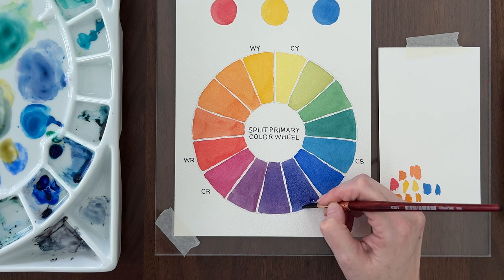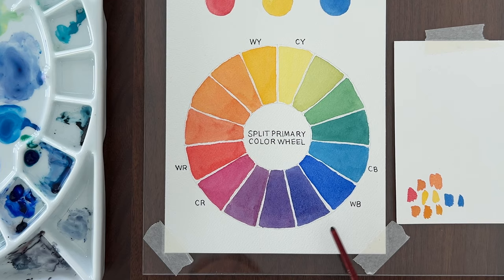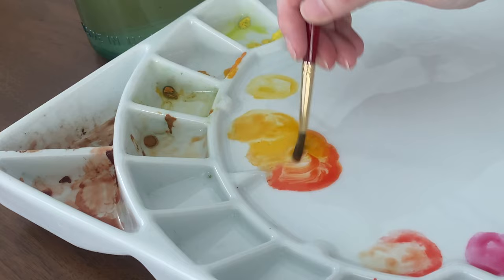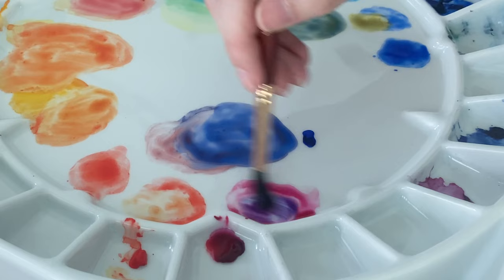So this split primary color chart is your recipe card for mixing clean, vivid colors. If you want a bright orange, use warm red and warm yellow. Bright green, use cool yellow and cool blue. Bright purple, use a cool red and a warm blue.